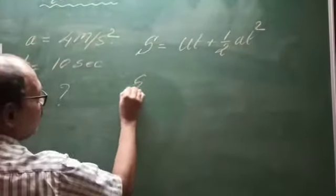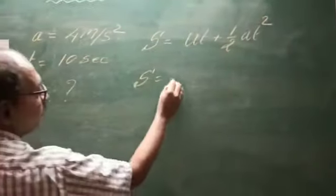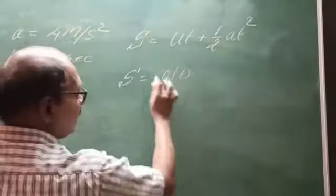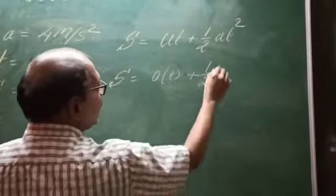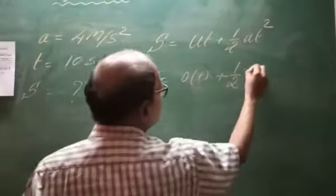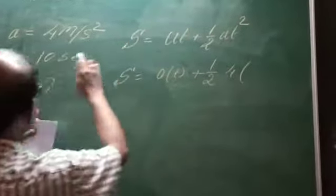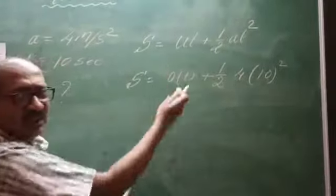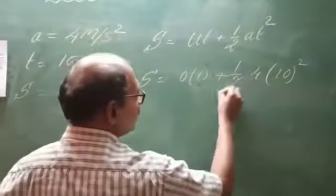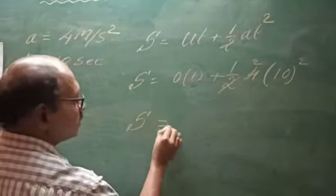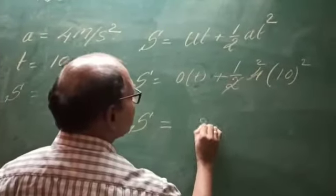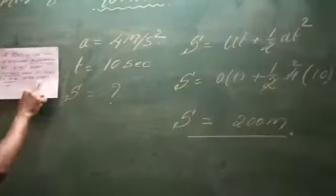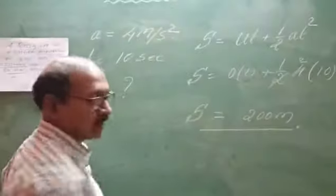So S is equal to: U is 0, so that term becomes 0. Therefore S is equal to half into A, which is 4, into T squared, which is 10 squared equals 100. So half into 4 into 100 gives 200. So the distance is 200 meters after it starts.